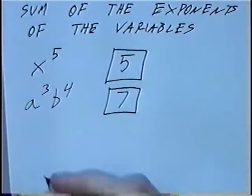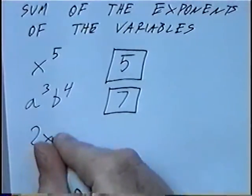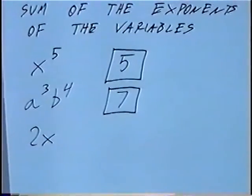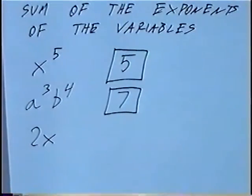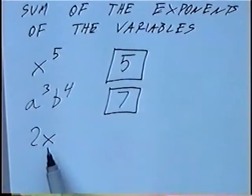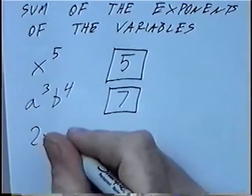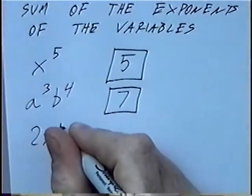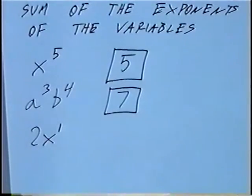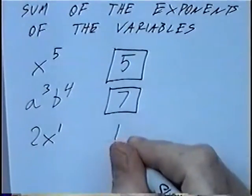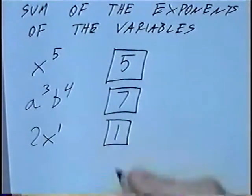Third question: 2x. Right now there are no exponents listed in this question. If you remember from previous chapters, if x does not have an exponent shown, we can add a one for the exponent. So 2x is the same as 2x to the first, meaning the degree is one.